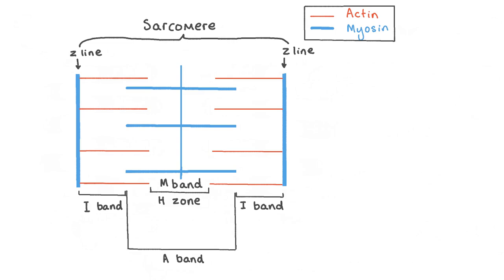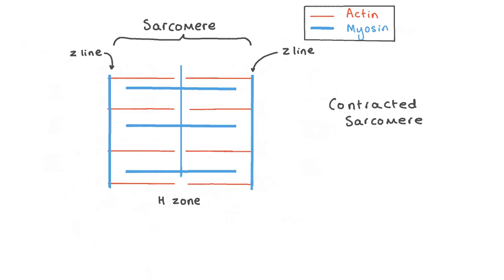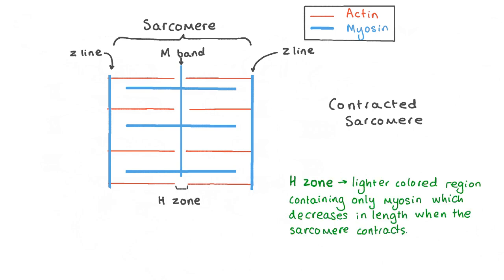Now let's see what happens when the sarcomere contracts. In the contracted sarcomere, the distance between the two Z lines decreases, so the length of the sarcomere also decreases. This is because the actin filaments are pulled by the myosin filaments closer towards the M line in the middle, which also means the length of the H zone — which only contains myosin — decreases. The decreasing length of the H zone is what causes the whole sarcomere to shorten.